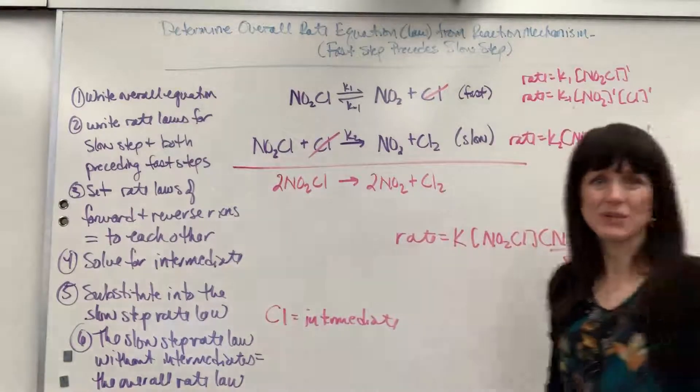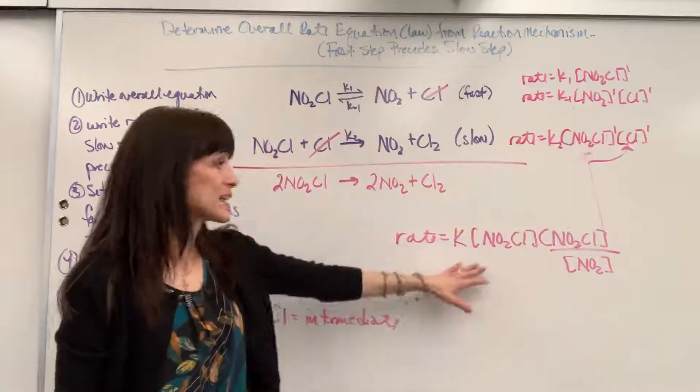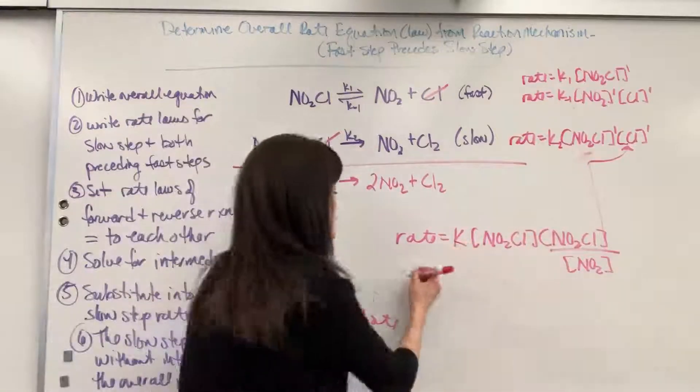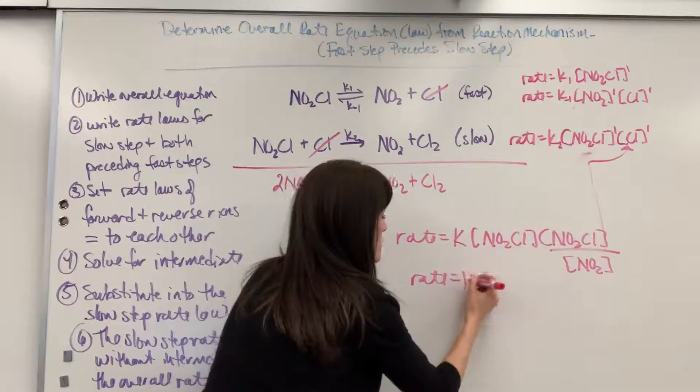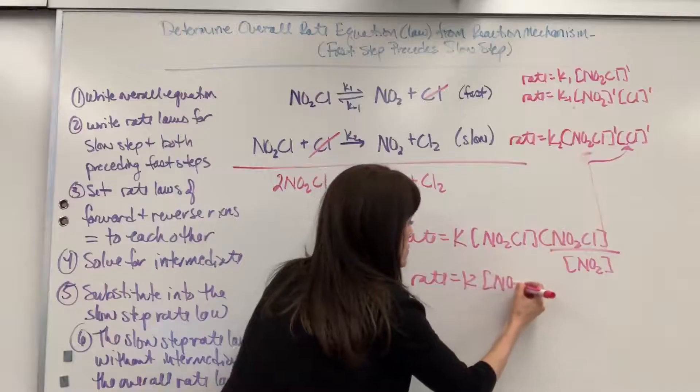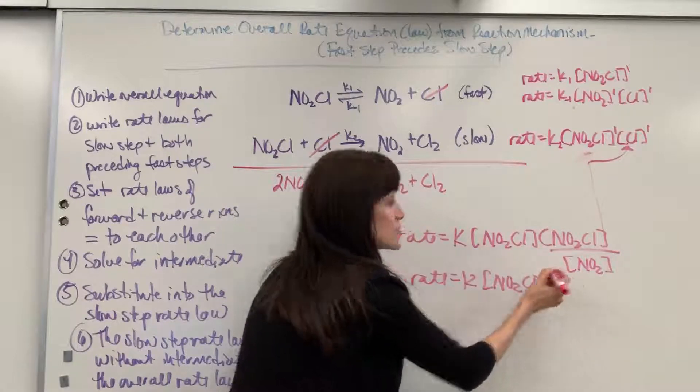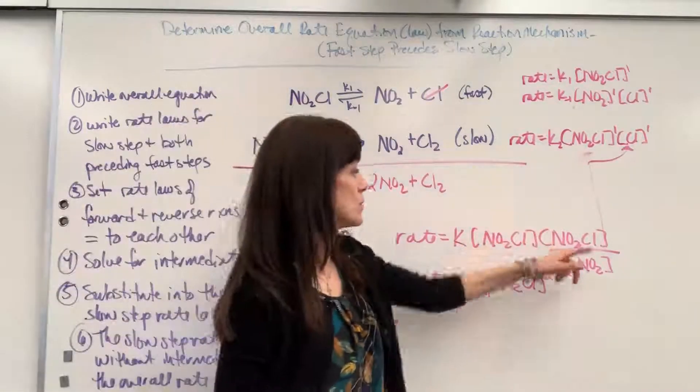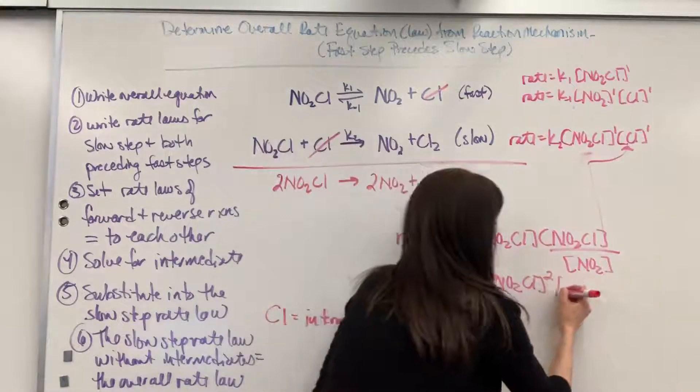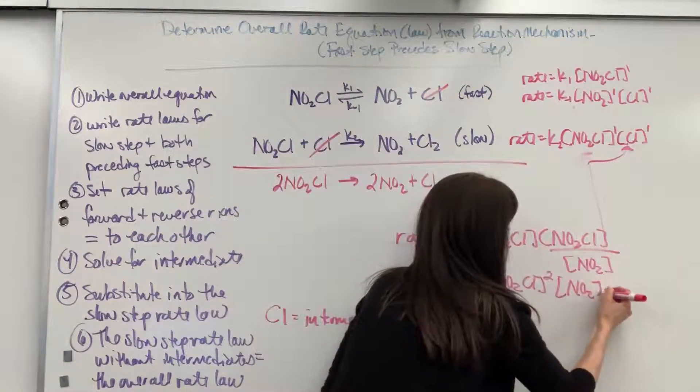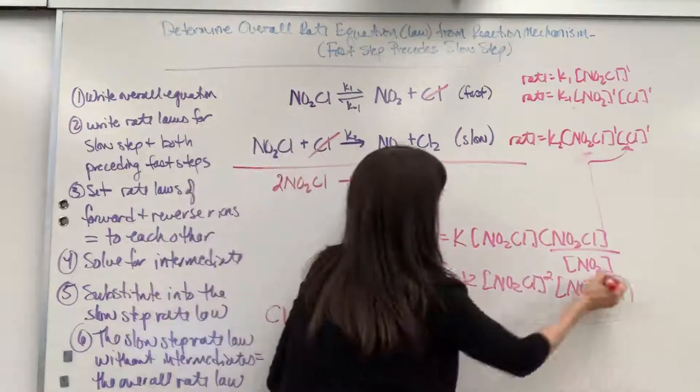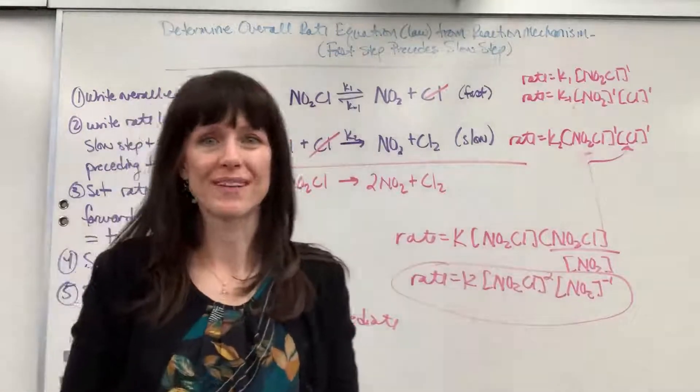That's your rate law. I can clean this up a little bit. You're going to have rate equals K NO2Cl squared, because I have two of those, and then this would be NO2 to the minus one. And there is our overall rate law.